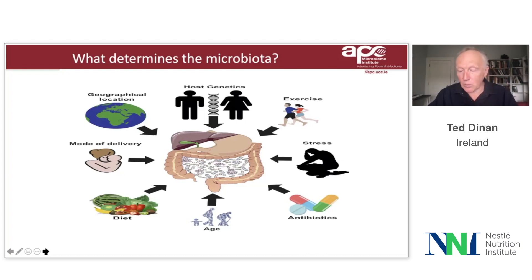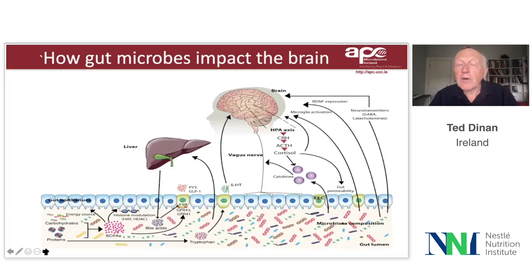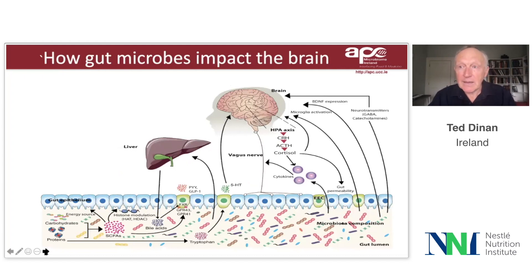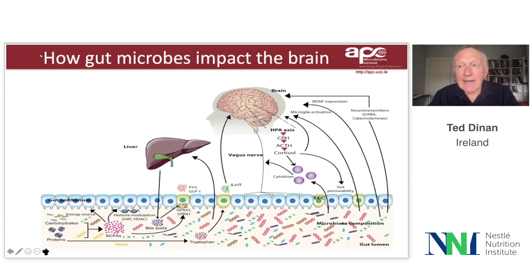We know that stress does play a role in determining gut microbiota content. How do the gut microbes of a child communicate with the brain? The vagus nerve is a long, meandering nerve which, both in the child and the adult, carries information from brain to gut and from gut to brain. It has been clearly demonstrated in my lab and in other labs that certain microbes can only communicate with the brain when the vagus nerve is intact — if it were damaged, that information would not be transmitted from gut microbes to the brain.